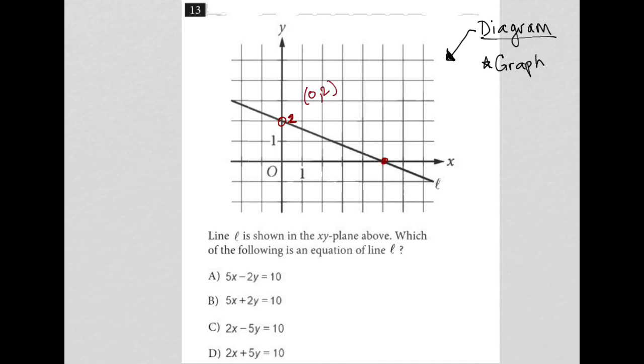My x-intercept is here at 1, 2, 3, 4, 5, or 5, 0. It's pretty much the only points we know for sure.